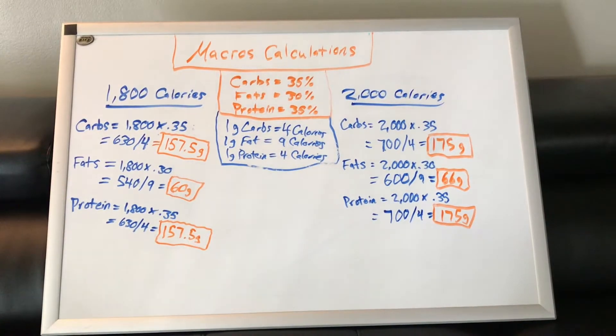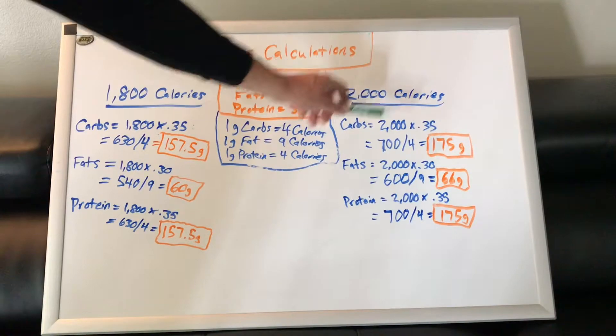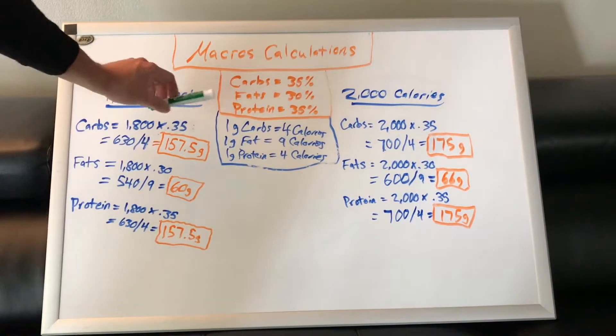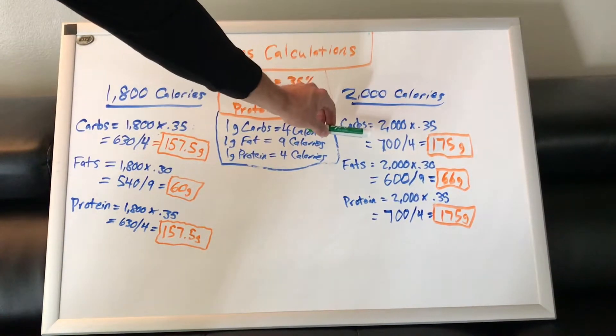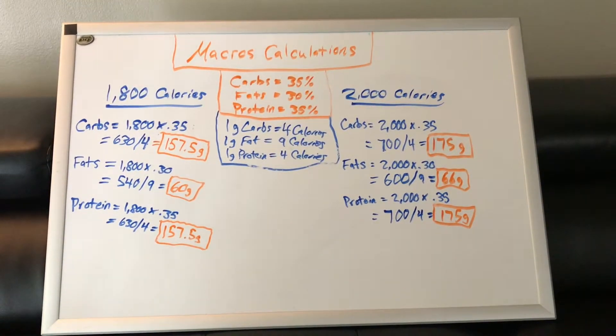The other one we have here is a 2,000 calorie a day diet. So over here, your carbs, 2,000 times 0.35, which is 35%. That's going to give you 700 calories. Since 1 gram of carbs equals 4 calories, you're going to divide 700 by 4, and that's going to give you 175 grams of carbs a day.